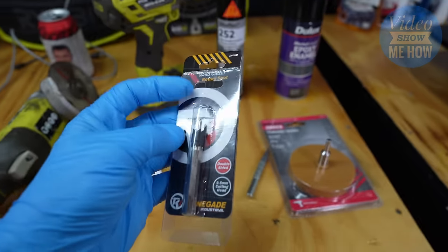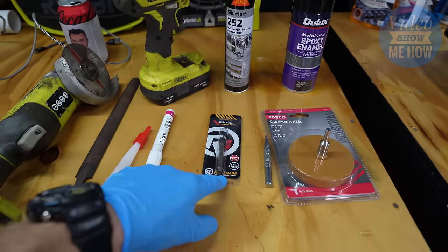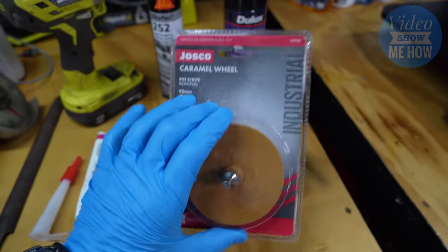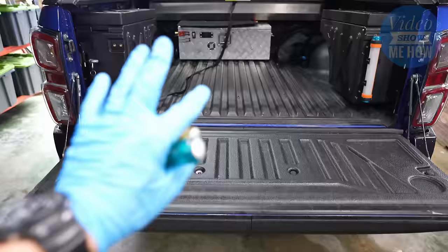Some touch-up paint. And also, ideally, one of these. This is a spot weld drill bit or a spot weld remover. If you don't have one of those, you can use just a big 13mm drill bit instead. And then also, something like a caramel wheel to get up any of the leftover factory adhesive.